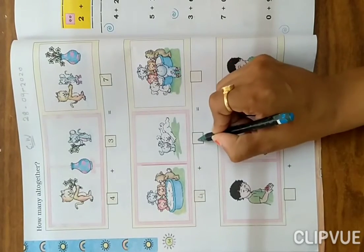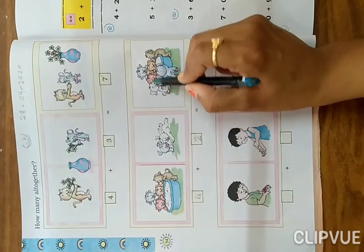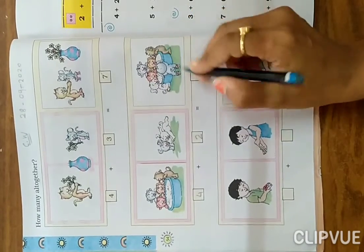Now count how many puppies. One, two, three, and four, so write here four. And here one and two, so two. Count all together: one, two, three, four, five, and six. Six puppies.